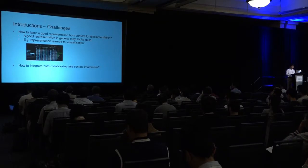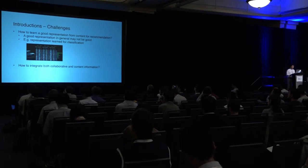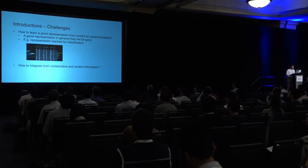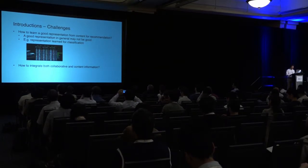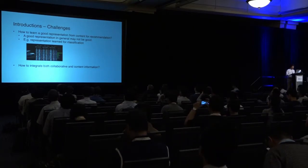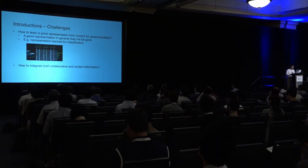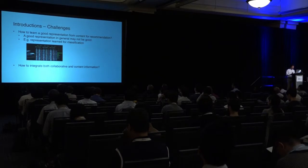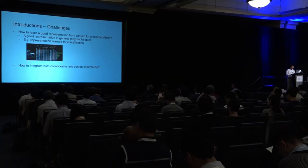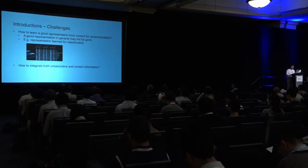But in order to do that, there are two challenges. One is how to learn a good representation from content for recommendation, because a representation learned for classification is not necessarily good for a recommendation task — we want to learn those parts of content that are recommendation-specific. The second challenge is how to integrate both collaborative and content information.